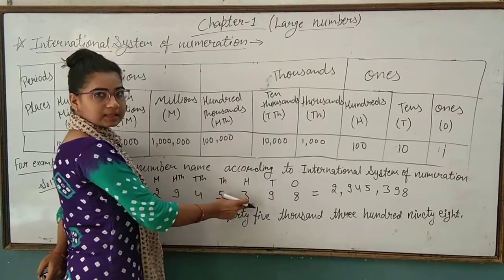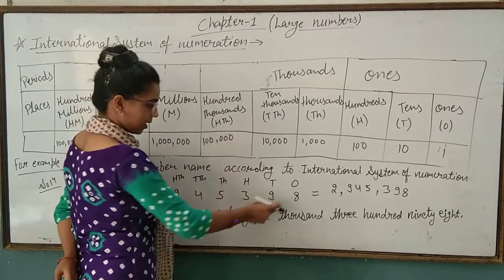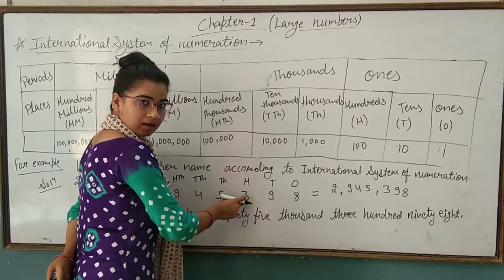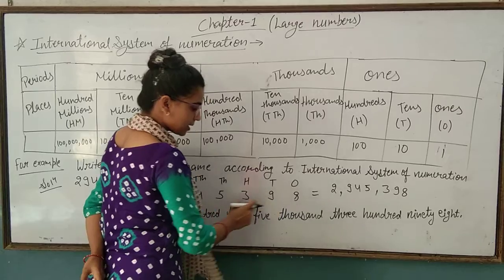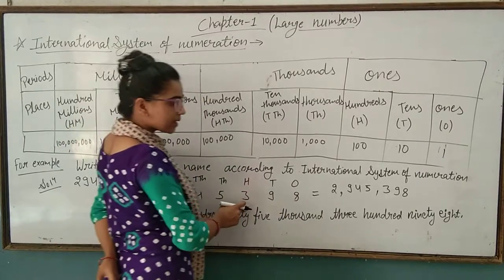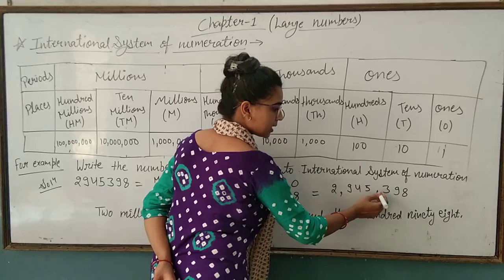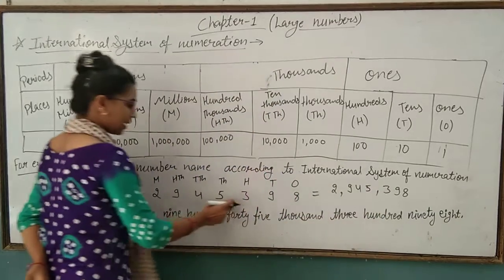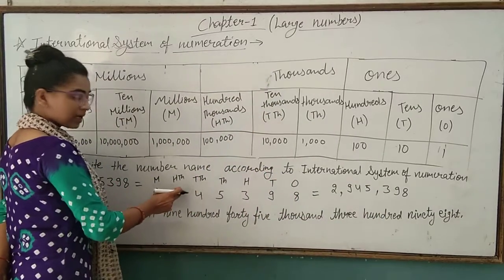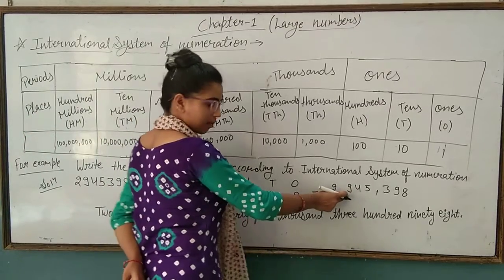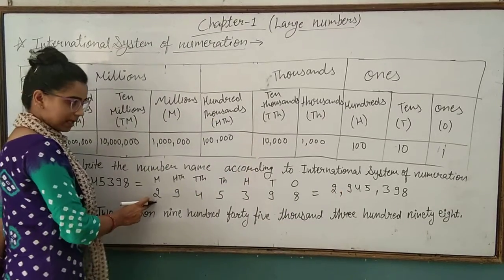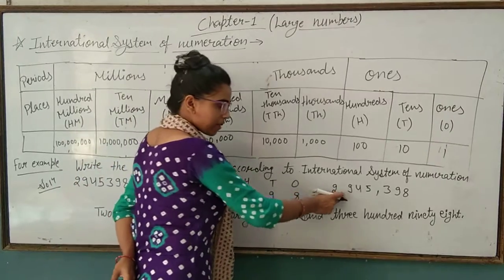Now we put commas according to periods. 1, 10, and 100 all are together: 8, 9, 3. Just before this, the next comma. Then 1, 10, and 100 thousand: 9, 4, 5. Just before this, we put a comma. Then 2 million. After 2, we put a comma.